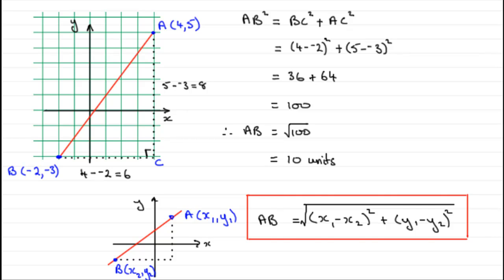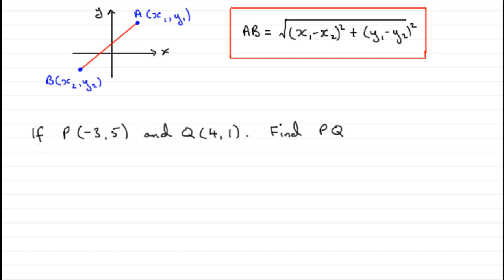Okay, well, I'm going to do a numerical example for you now, or you might like to try it. Okay, so here we've got our question. If P has coordinates minus 3, 5, and Q has coordinates 4, 1, we've got to find the distance PQ.